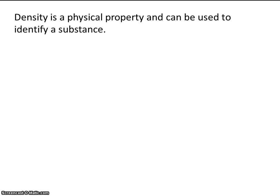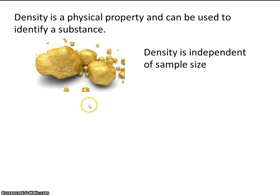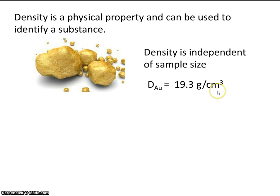Density is a physical property and can be used to identify a substance. You'll probably recognize this as gold — there are some small pieces and some large pieces of gold. Density is independent of sample size, so it doesn't matter if the piece is small or large; gold will always have the same density. The density of gold is 19.3 grams per centimeter cubed — that's 19.3 grams for every 1 centimeter cubed of gold.